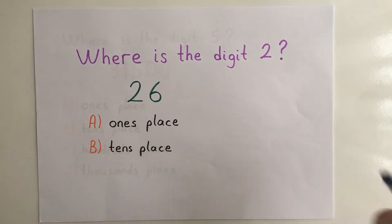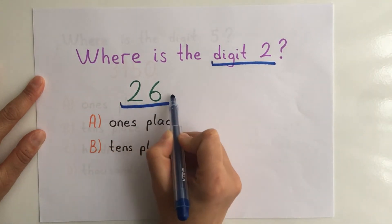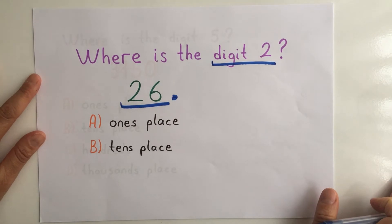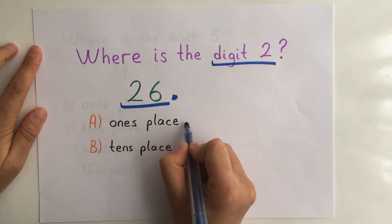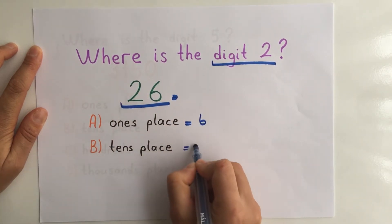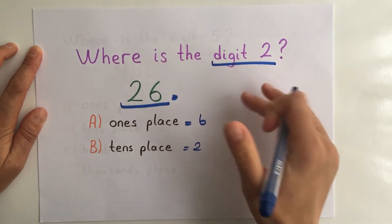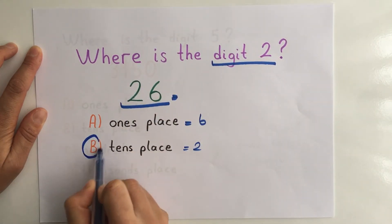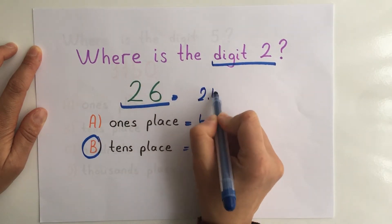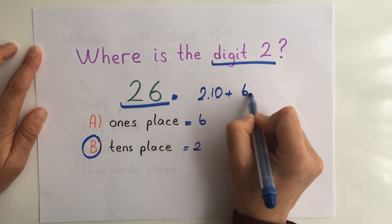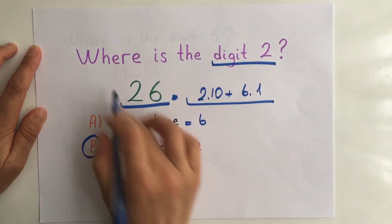Let's talk about digits today. You know 26 is two numbers together. Here I see 6 is on the ones place and 2 is on the tens place. So the question asks where is the digit 2 — digit 2 is on the tens place. It's 2 times 10 plus 6 times 1, and you can see it's very easy.